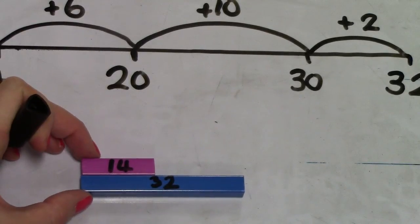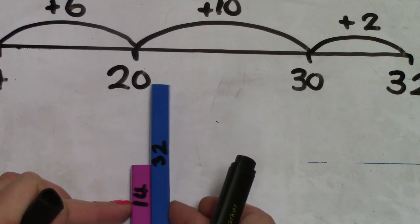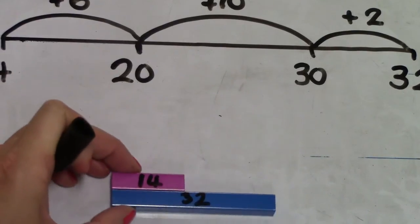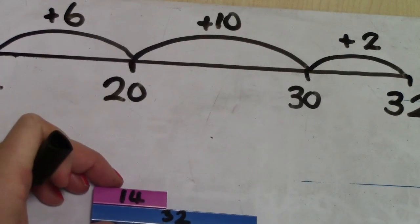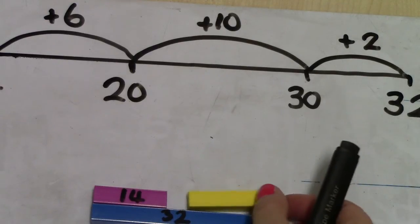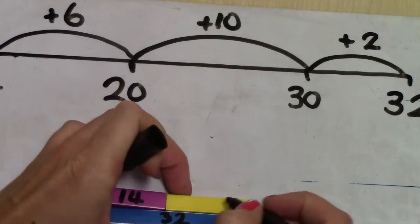We're finding the difference. You can see how this would link quite well to measurements and to finding the difference on bar charts and that kind of representation of finding the difference. So comparing 14 and 32, we're starting from 14 and we're counting up to 32, and we find out that the answer is 18.